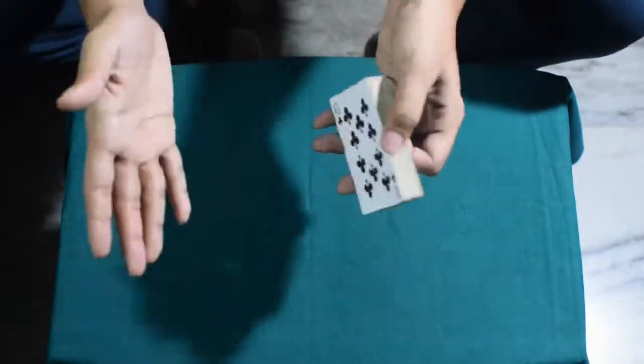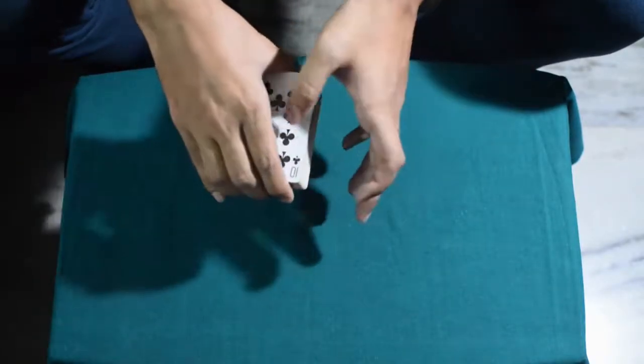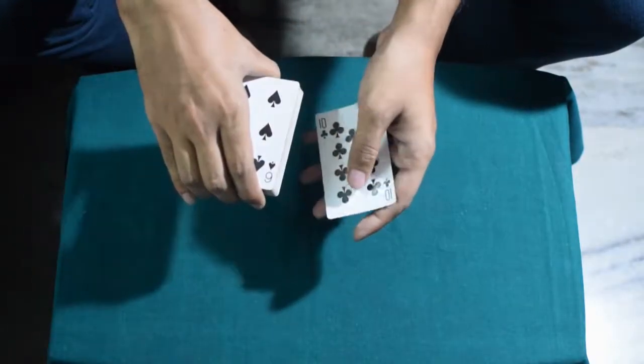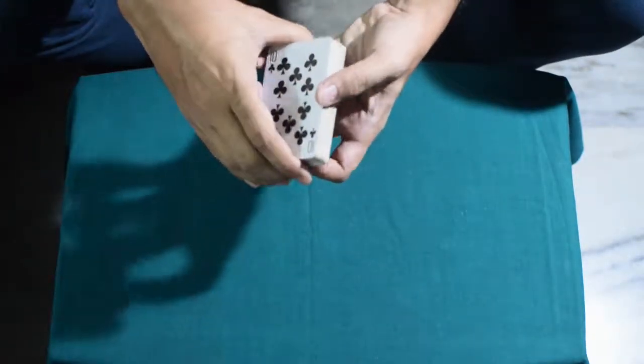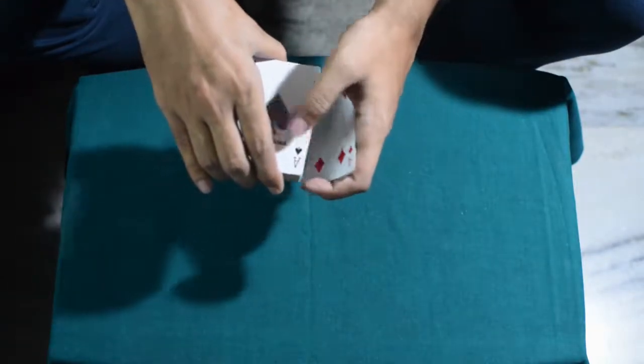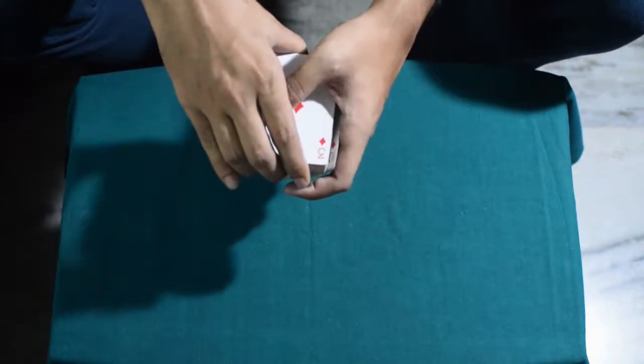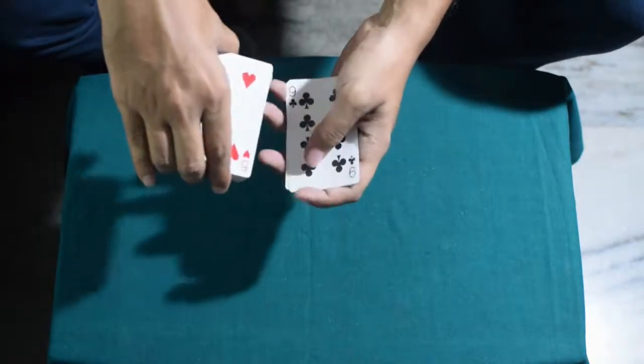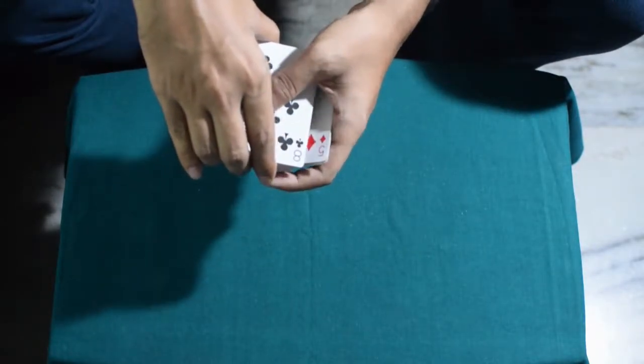Now you say to your spectator that you fan off some of the cards, and even if they see their card, they are not to react or make any noise whatsoever. So you start fanning off cards like this on your hand, and you count to the 11th card. So 1, 2, 3, 4, 5, 6, 7, 8, 9, 10.